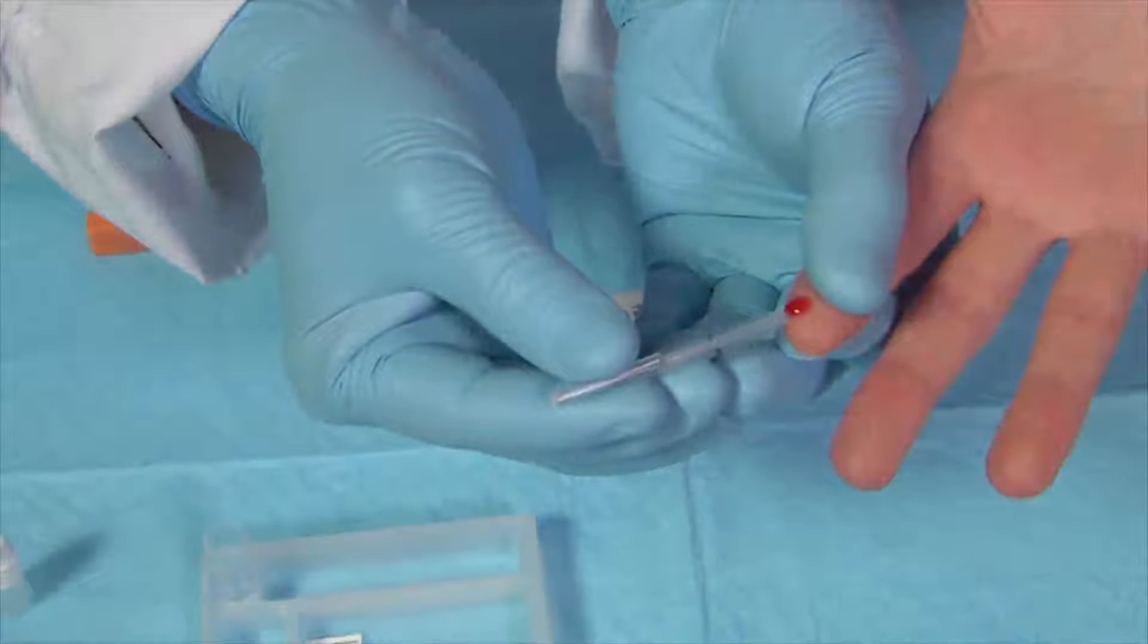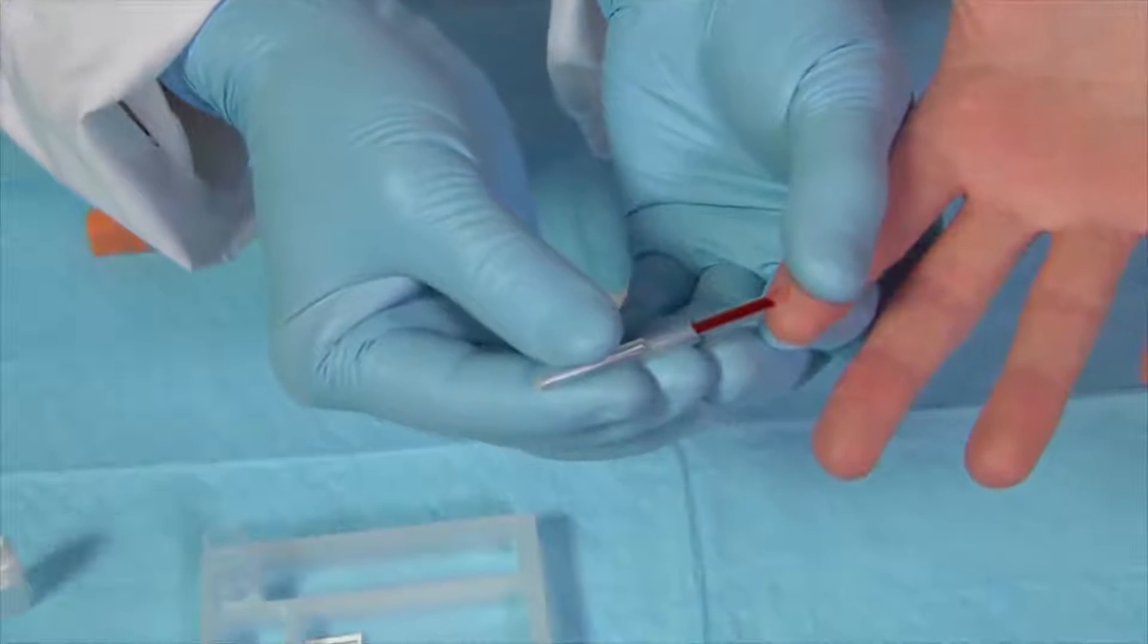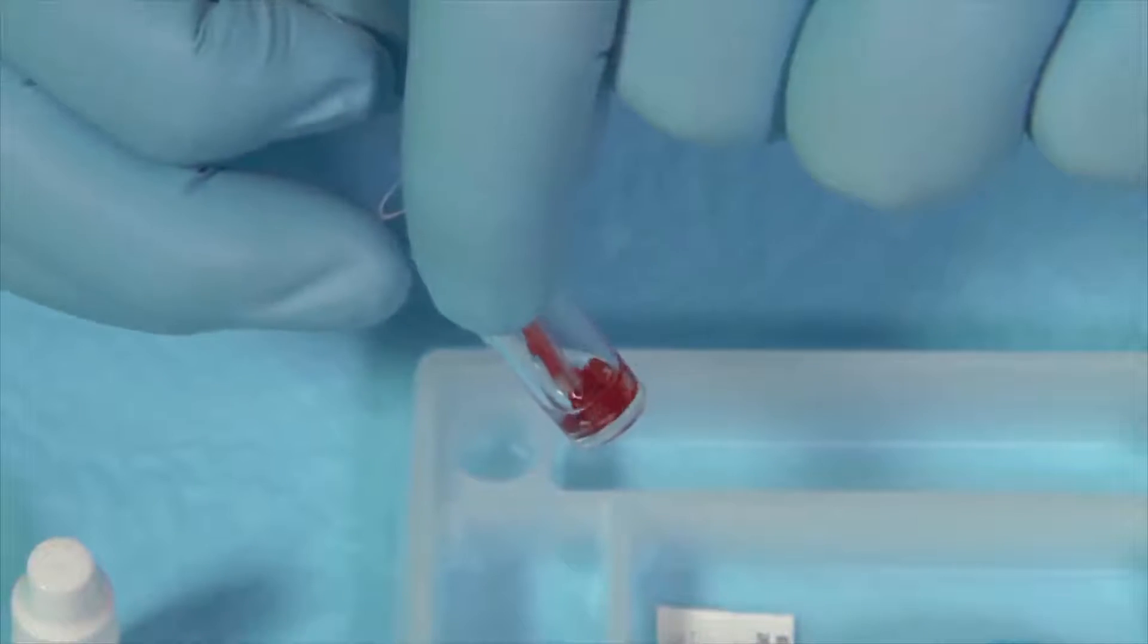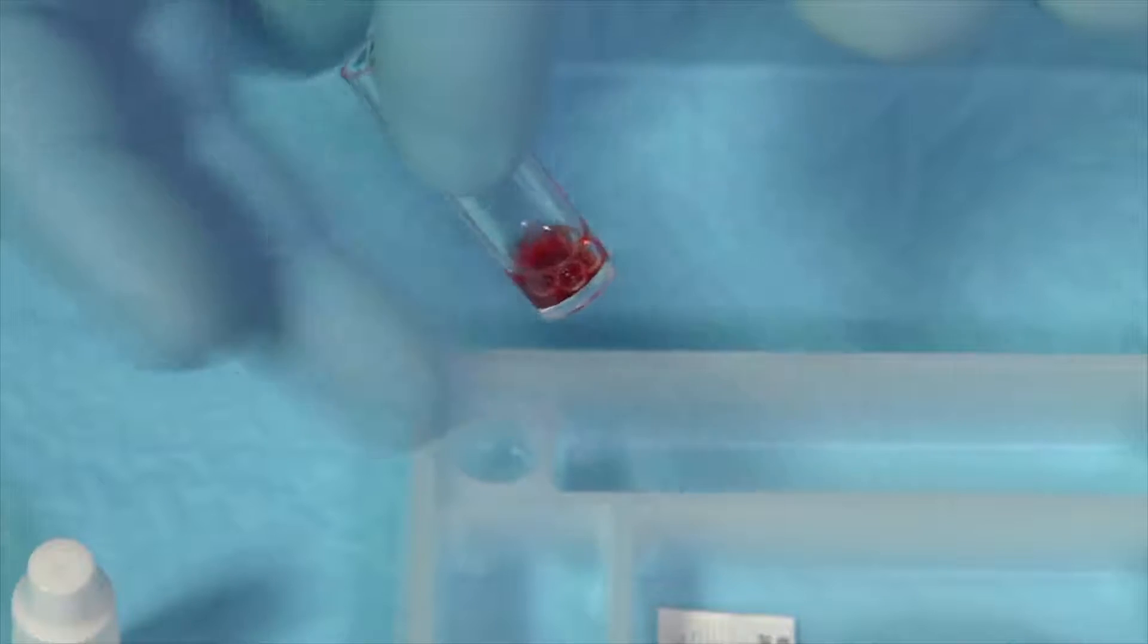The pipette will automatically fill with the correct amount of blood. Empty the pipette into the sample vial containing the buffer and gently tap until the mixture is a transparent and uniform color.